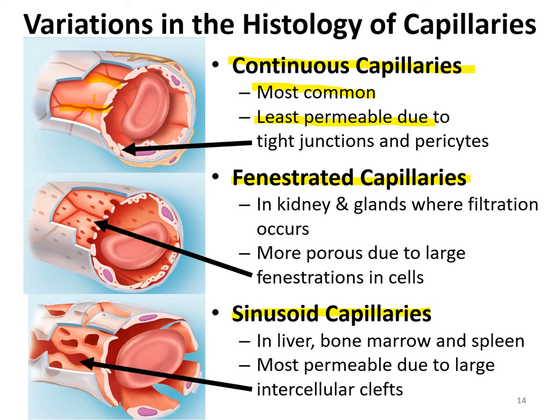There are often tight junctions that help limit the permeability of continuous capillaries. Gases diffuse readily — oxygen, carbon dioxide — but transporters are needed for some things like glucose, which is a little bit bigger. These different vessel types vary in how permeable, or how 'leaky,' they are.